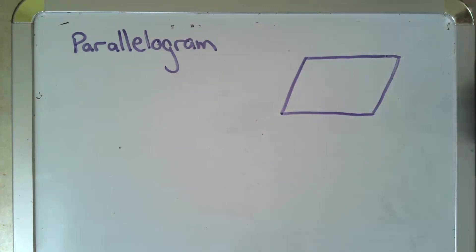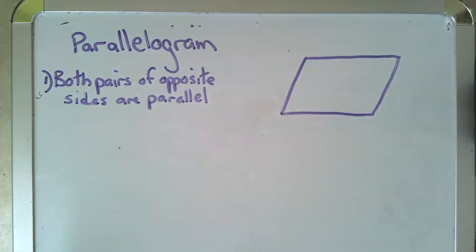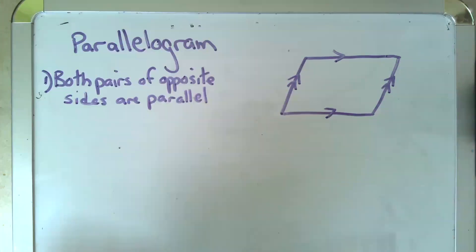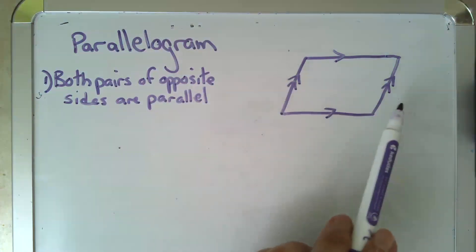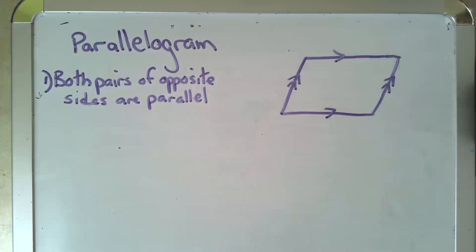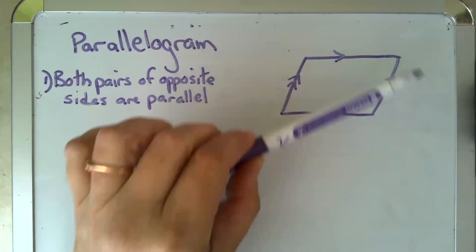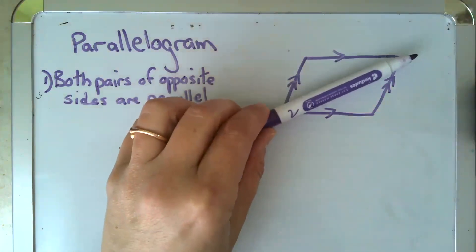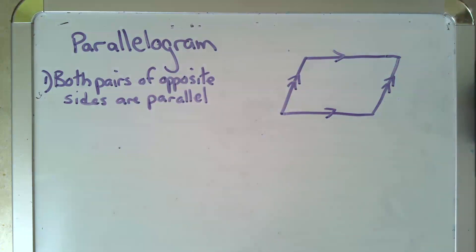The first shape we're going to talk about today is a parallelogram. As you can see from the name, one of the first things about a parallelogram is that both pairs of opposite sides are parallel. So these two sides are parallel and these two sides are parallel. Word to the wise: whenever you're told things are parallel, be on the lookout that when you start cutting things by transversals in the disguise of diagonals, you're going to wind up with alternate interior angles, corresponding angles, things like that.